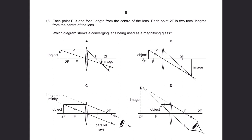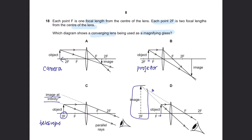Question 18. Each point F is one focal length from the center of the lens, and each point 2F is two focal lengths from the center. Which diagram shows a converging lens being used as a magnifying glass? When the object is placed beyond 2F, that is for a camera. Between 2F and F is for a projector. At 2F with image at infinity is for a telescope. If the object is placed in front of F with an enlarged image, that is a magnifying glass. So the answer is D.